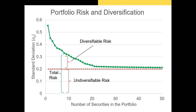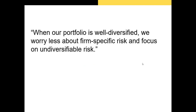Most mutual funds will hold at least 20 or 25 different securities. Many mutual funds have a rule that they will hold no more than 5% of their assets in any one security, so many will have between 30 and 60 different securities. What ends up happening is most investment funds that diversify their portfolio are exposed to very little diversifiable risk. When our portfolio is well diversified, we worry less about firm-specific risk and focus more on undiversifiable risk — the risk that's left once we've near-perfectly diversified across a broad range of industries and markets.